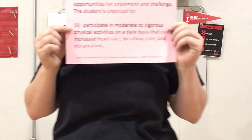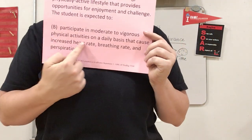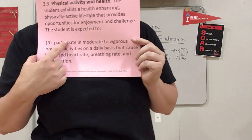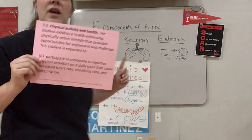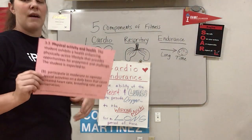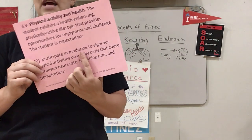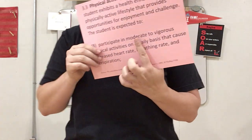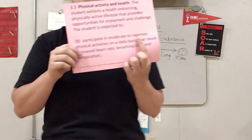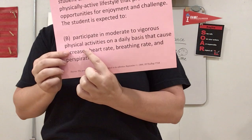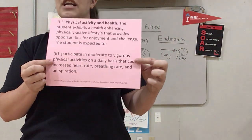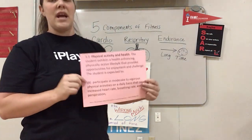Your objective says you should be able to participate in moderate to vigorous physical activity on a daily basis — that means you should actually do it. Moderate to vigorous means getting that heart pumping, working on cardio endurance. If your heart's not pumping, then you're not moving at least moderately — you're moving too slow. Moderate is kind of a middle pace, all the way up to vigorous, which is like super fast: running fast, jump roping for a long time. You should do those physical activities on a daily basis.